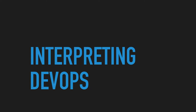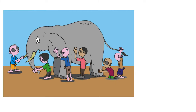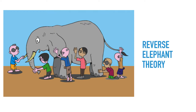In the previous video I talked about the definition of DevOps, what it is and why we need it. Now we're going to talk about how we interpret DevOps, and this is very important. It gets very confusing because everybody talks about different aspects — some people say it's about culture, some say it's about tools and automation, some say it's about just principles, and so on and so forth.